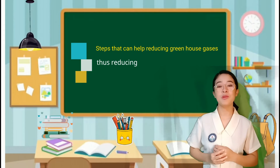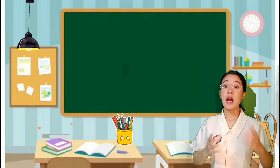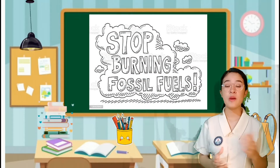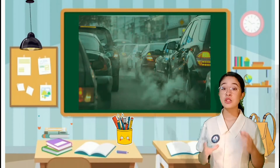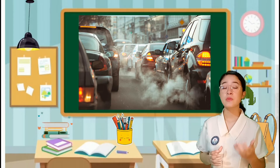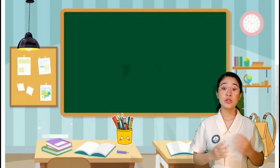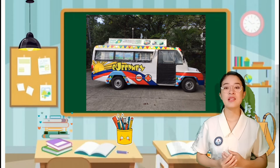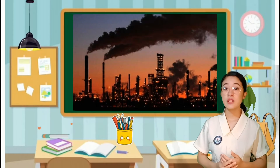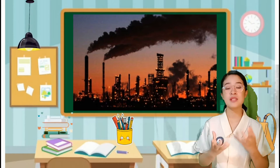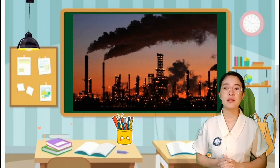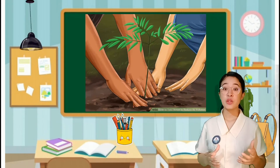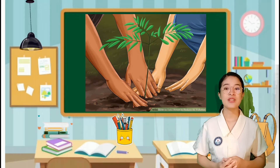First, avoid or stop burning fossil fuels. Second, reduction in transportation pollution. Third, using electric vehicles. Fourth, restricting the emission of greenhouse gases from factories. Fifth, increase plantation and promote reforestation.